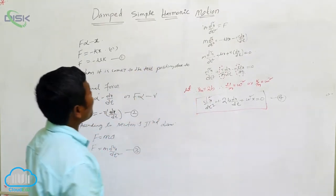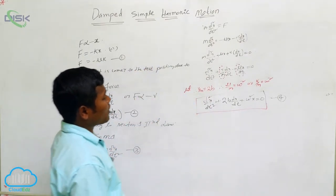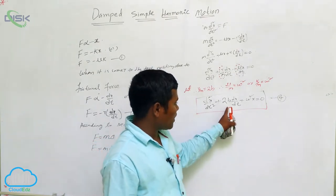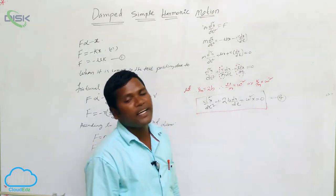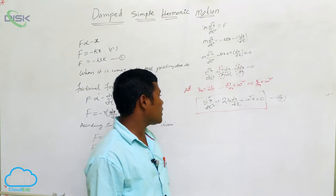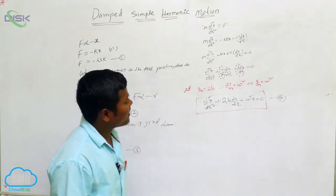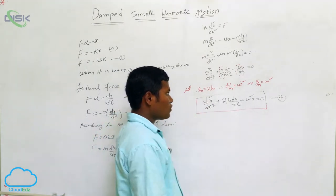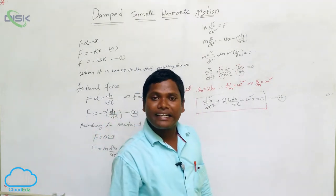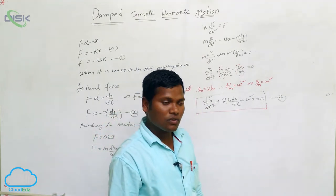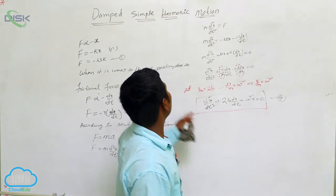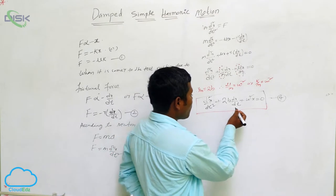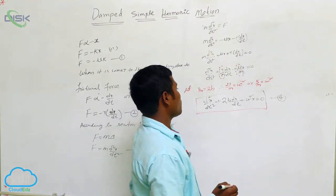This equation we are calling the damped simple harmonic motion. If you observe this, it is a second order differential equation, so how many roots may be possible? Definitely there will be two roots possible. If you find those roots, then we can tell that solution is the damped simple harmonic motion. Now we are going to solve this equation.